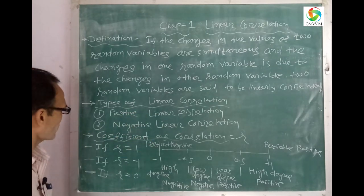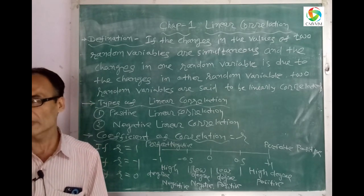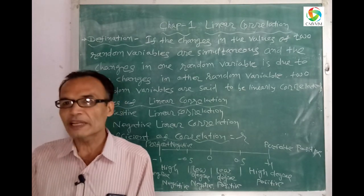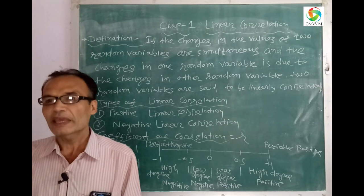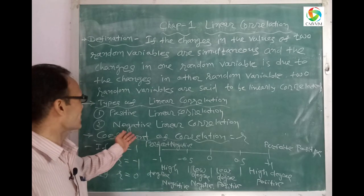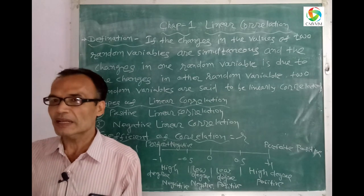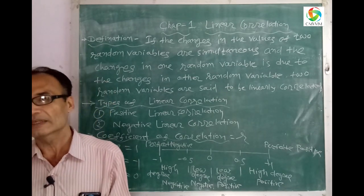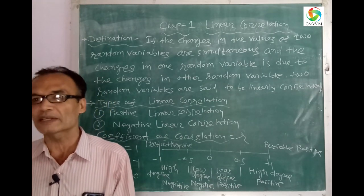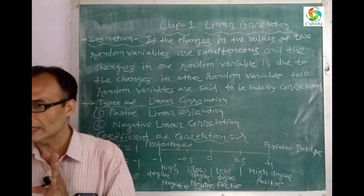When sale of Hero Honda motorcycles and sale of petrol in Morbi both increase, both variables are linearly correlated. Now we proceed to the types of linear correlation. There are mainly two types: first is positive correlation, and second is negative correlation. When two variables both increase together or both decrease together, that is called positive correlation. When one variable increases and the other decreases, or one decreases and the other increases — that is opposite movement — that is called negative linear correlation.